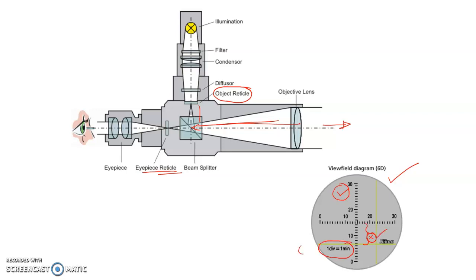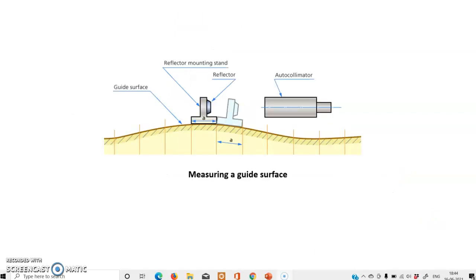In some machines, there is a graduated eyepiece reticle from which the deflection can be calculated directly — for example, one division equals one minute, meaning theta is read directly from the dial. In other cases, if x is shown, the equation must be used to find theta. In yet other cases, only a cross wire is present, and the micrometer dial must be moved to match the green wire, measuring how much distance has been moved to determine x, or some machines directly give the angle theta.